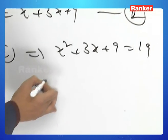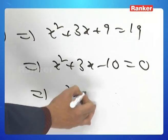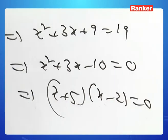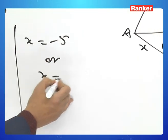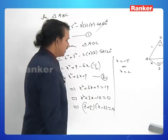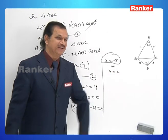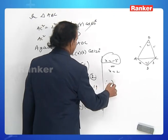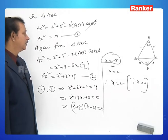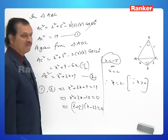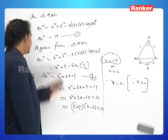So x² + 3x − 10 = 0, which factors as (x + 5)(x − 2) = 0. Thus x = −5 or x = 2. Since x is the length of a side, it cannot be negative. Therefore x = 2.